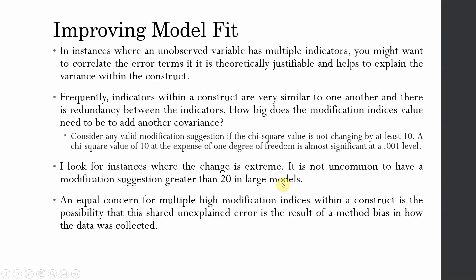You will have suggestions greater than 20, even 30, 40, 50. An equal concern for multiple high modification indices within a construct is the possibility that this shared unexplained error is the result of a method bias in how the data was collected.